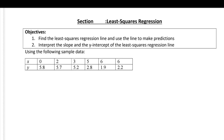This section is on least squares regression. The objectives are to find the least squares regression line and use the line to make predictions, and also to interpret the slope and the y-intercept of the least squares regression line.